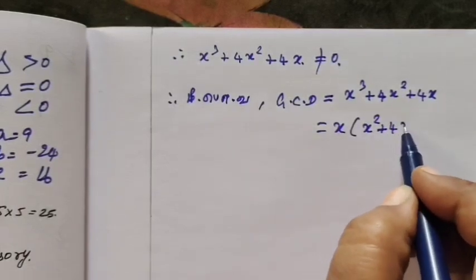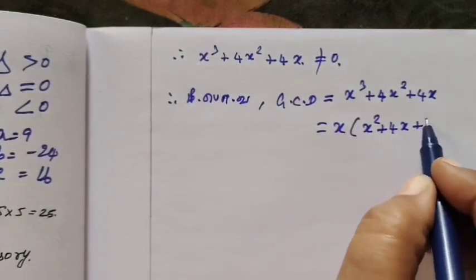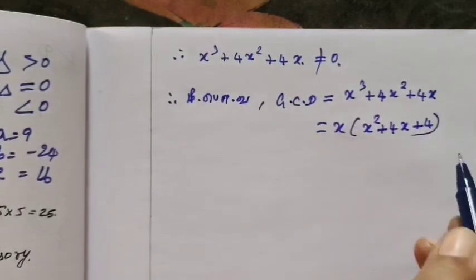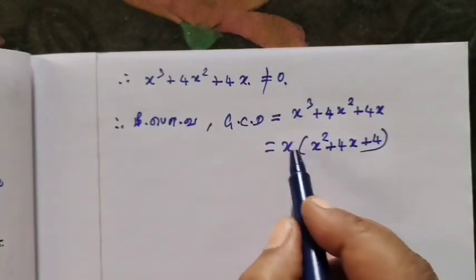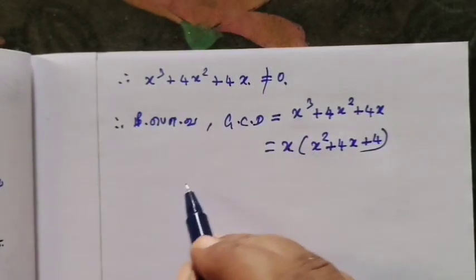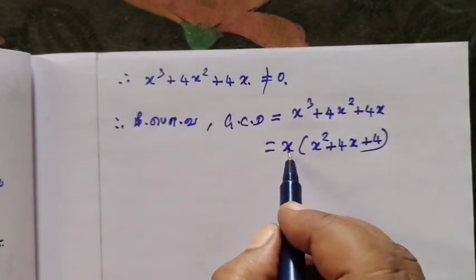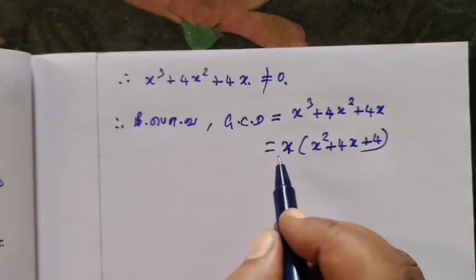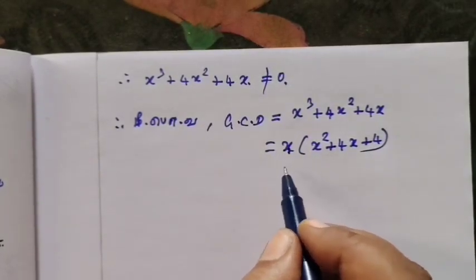x squared plus 4x plus 4. So if we start from beginning x, the answer is 0. That way we will finish.